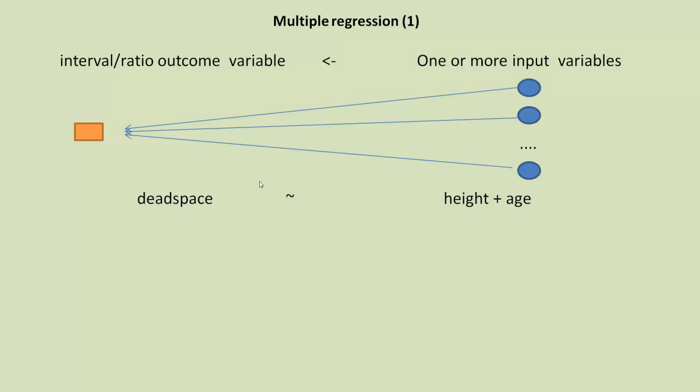Tilde I've used because it's the sign we use in R when we write the R function for the model. Tilde means it's modeled as a function of. So we're saying here dead space is modeled as a function of height plus age.